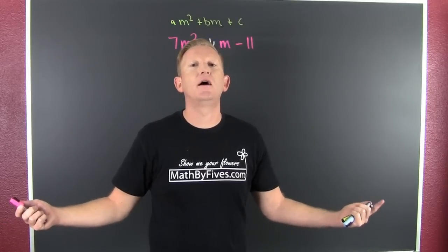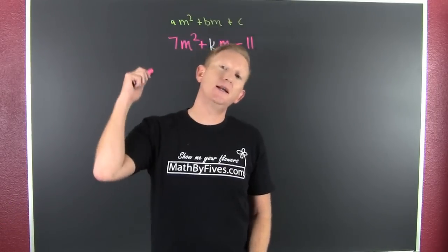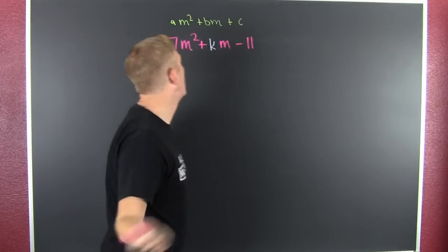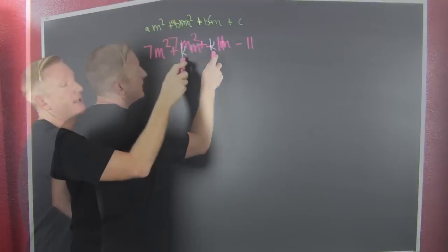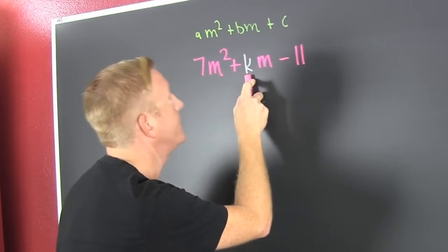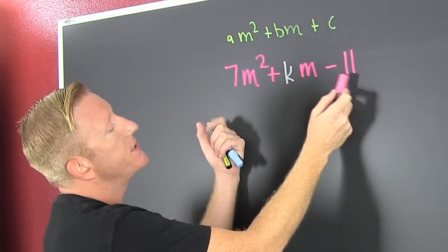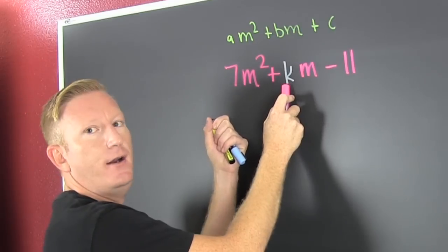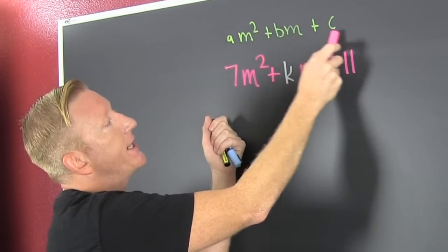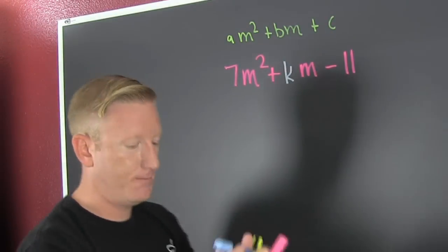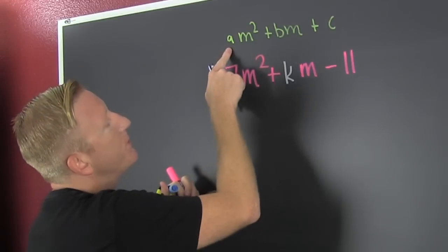We want to find all our k's that are going to allow that quadratic to factor. K is going to be that middle term and we need to find the factors of those guys that are going to subtract to be k.